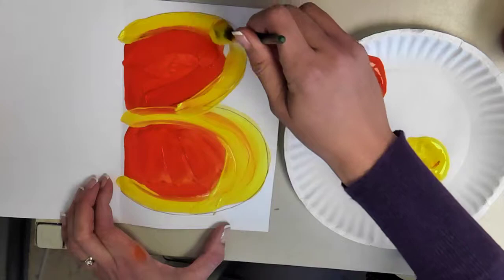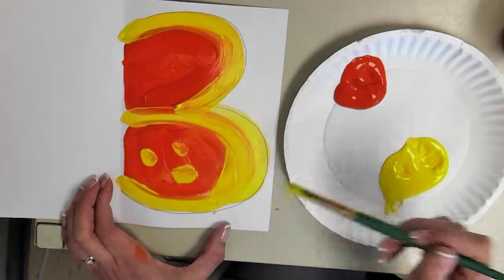Today we are just putting the solid color on, and then next time that we are together we are going to be putting the black lines on for our monarch butterfly.